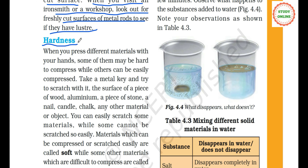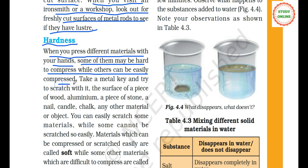Hardness — we have read appearance. Now the next property is hardness: how hard or soft any material is. On this basis also we can classify materials. When you press different materials with your hands, some of them may be hard to compress while others can be easily compressed. For example, pressing a plastic toy, then paper, then a sponge — sponge will be very easily compressed while a plastic toy will not compress easily.